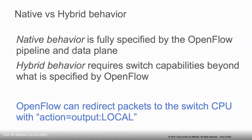Native behavior is that which is fully specified by the OpenFlow pipeline — the data plane, the protocol, everything. Hybrid behavior relies on certain switch capabilities. We had a discussion earlier today about one aspect of hybrid behavior: the control plane network. The general consensus was yes, we need to have an out-of-band interface. If you want to have in-band connections to the OpenFlow controller, do so with great care.